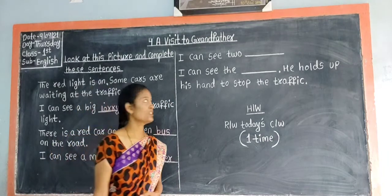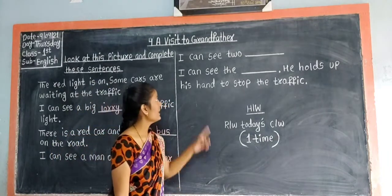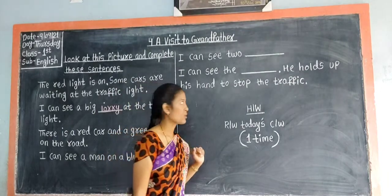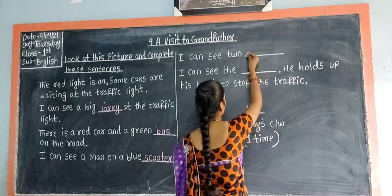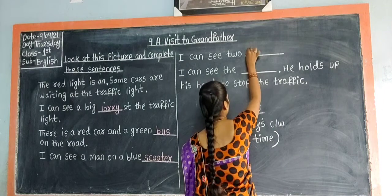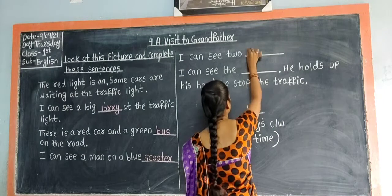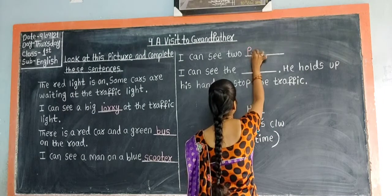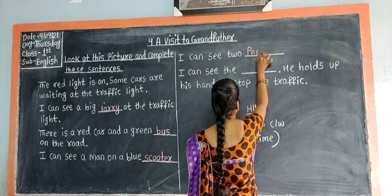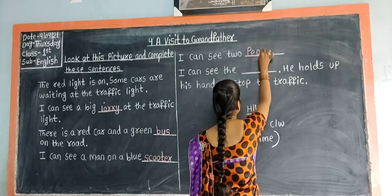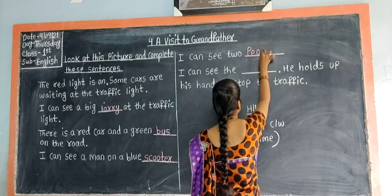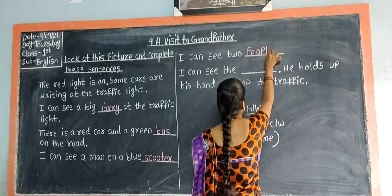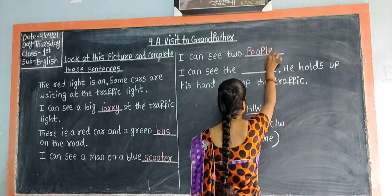Very good. You can see two people. So write 'people' in the blank. P-E-O-P-L-E. People.